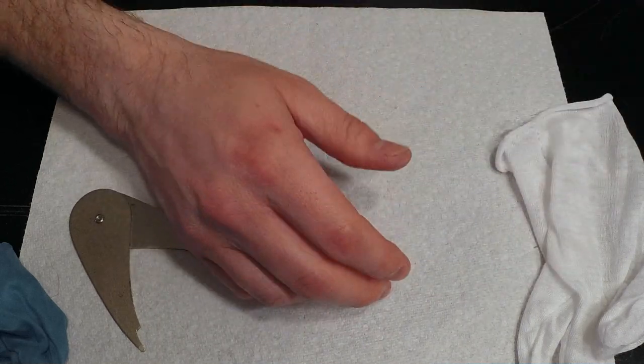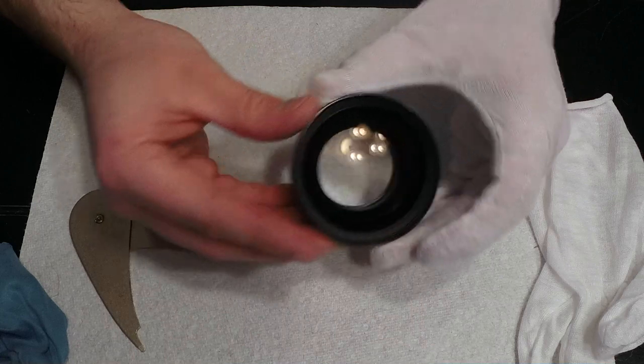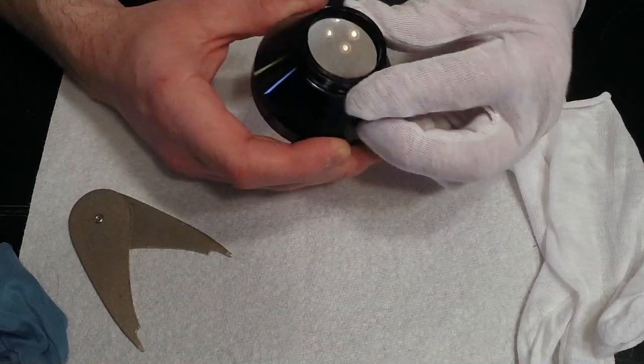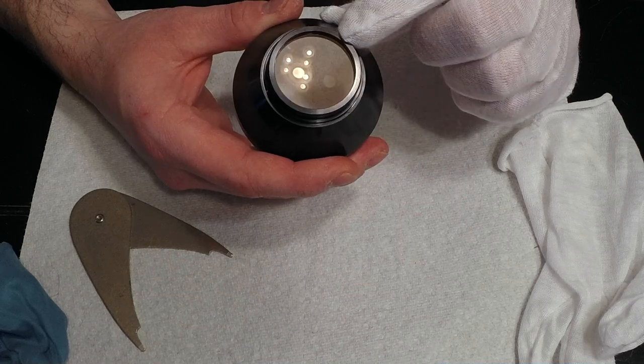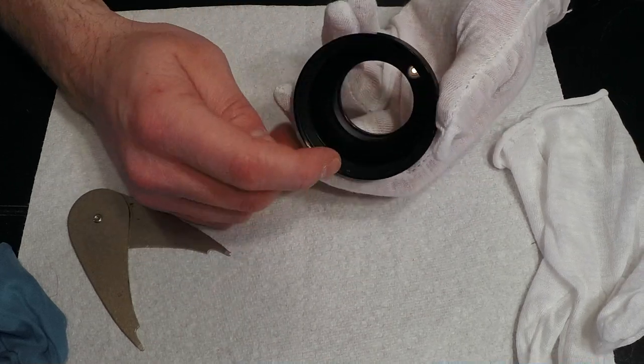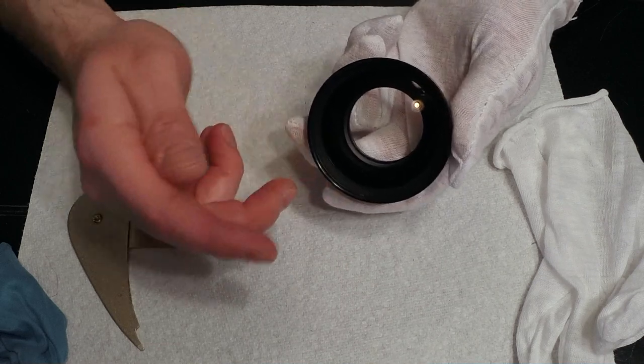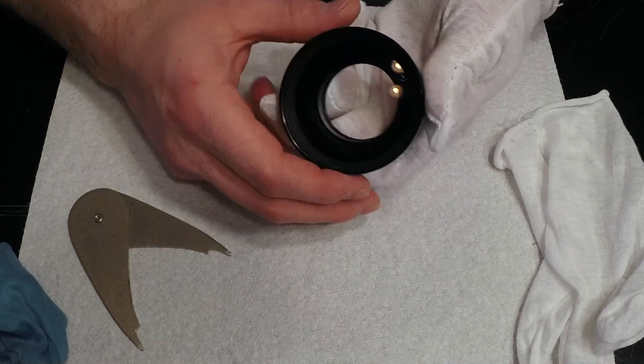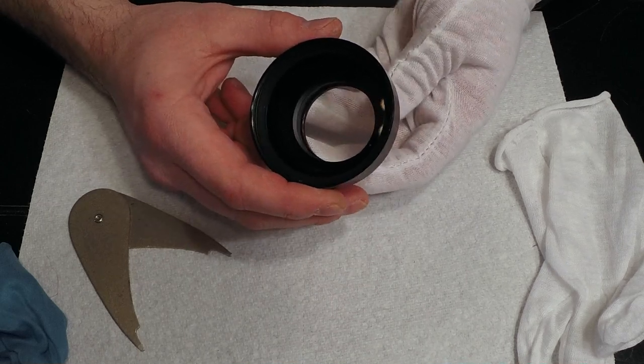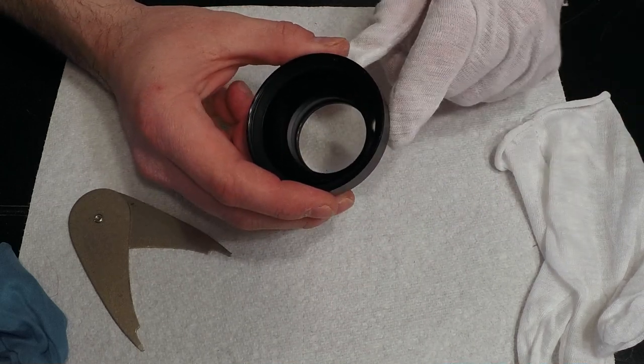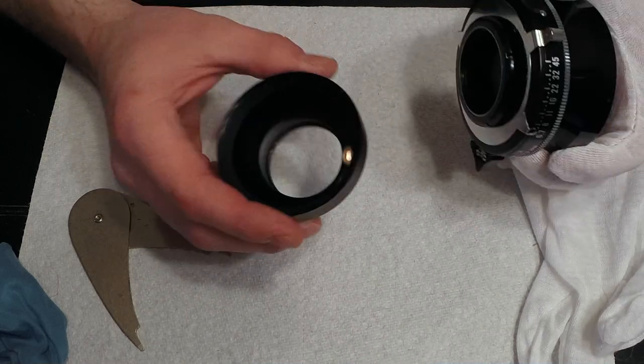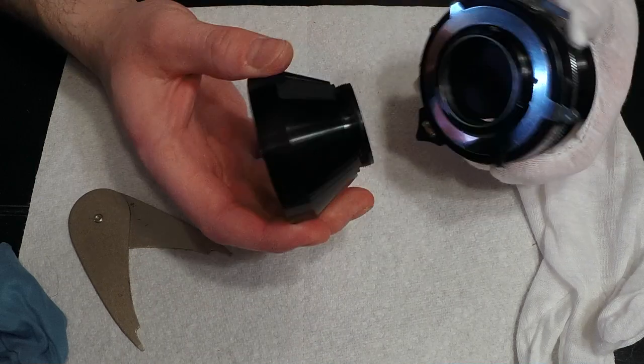Then what I would do would repeat the process on the rear element here, so you know it just goes the same way. This one does not have a retaining ring on the back so I expect the lens element just to come out there. But again, you would just loosen this retaining ring here, remove the elements like I did to the front element there, clean it out, put it all back carefully, and then put it back into your shutter.